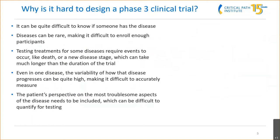Believe it or not, it can actually be quite difficult to know if someone has the disease. For example, in Alzheimer's disease, the only confirmation is an autopsy of the brain after the person has passed away. Diseases can also be very rare, making it difficult to enroll enough participants. Testing treatments for some diseases may require events like death or a new disease stage to occur, which may take much longer than the trial duration. Even within one disease, the variability of how it progresses can be quite high, making it difficult to measure and identify if a treatment is effective.